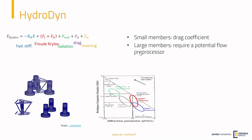When the body is in the water, it can undergo all of these forces: the hydrostatic stiffness, the Froude-Krylov forces, the radiation force, drag force, and also the mooring forces. But we don't have to compute all of these forces for each body. If we look at the KC number, which compares the body dimension to the wavelengths of the waves, we can see that some forces will dominate over others. For large members, we will mostly have the inertial forces — the Froude-Krylov and radiation terms. For smaller members, we will have more of the drag forces.